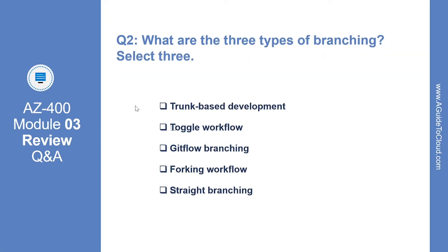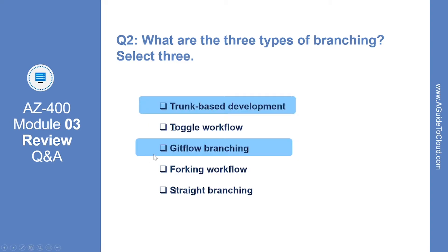Let's look at question number two. What are the three types of branching? You need to select three answers. The correct answers are trunk-based development, git flow branching, and forking workflow.